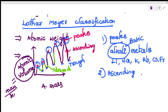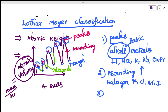The ascending part of the graph contains the halogens group: fluorine, chlorine, bromine, and iodine. They show similar properties. In every graph the sequence is the same — fluorine, then chlorine, then bromine, then iodine — and they are all present in the ascending portion.